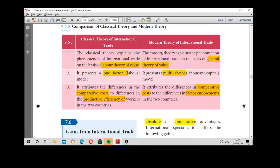There are only three points to remember. The classical theory is based on the labor theory of value. You need not write all these things. You just write classical theory of trade is based on labor theory of value. But here it is a general theory of value. Labor theory of value, general theory of value.